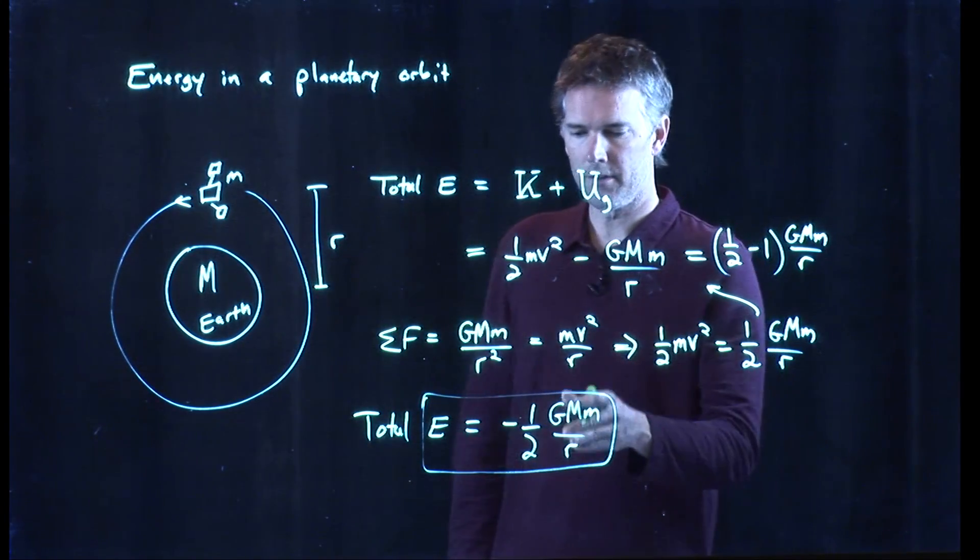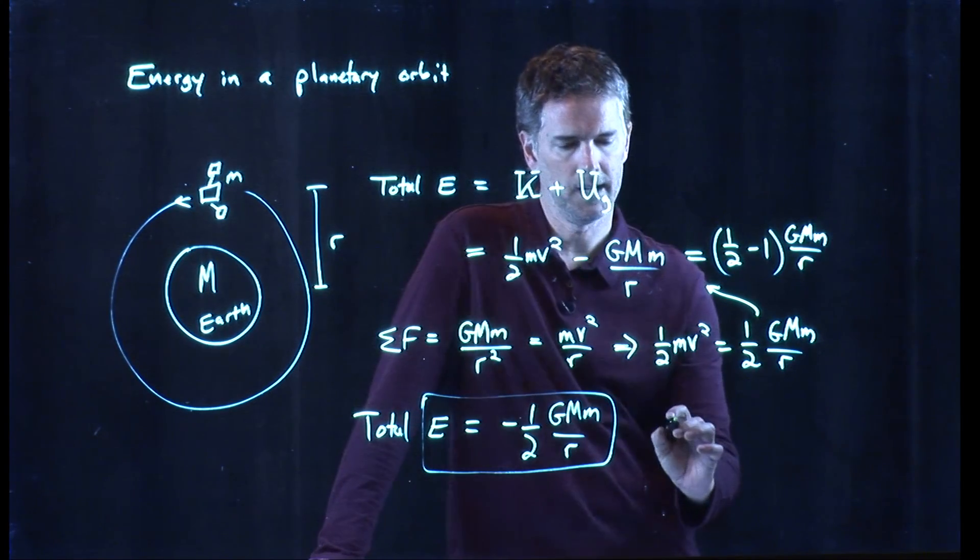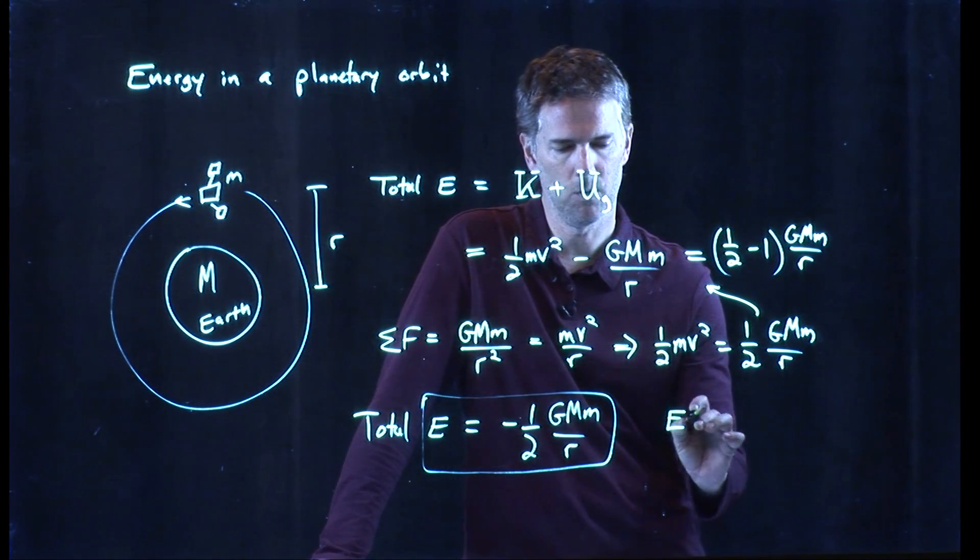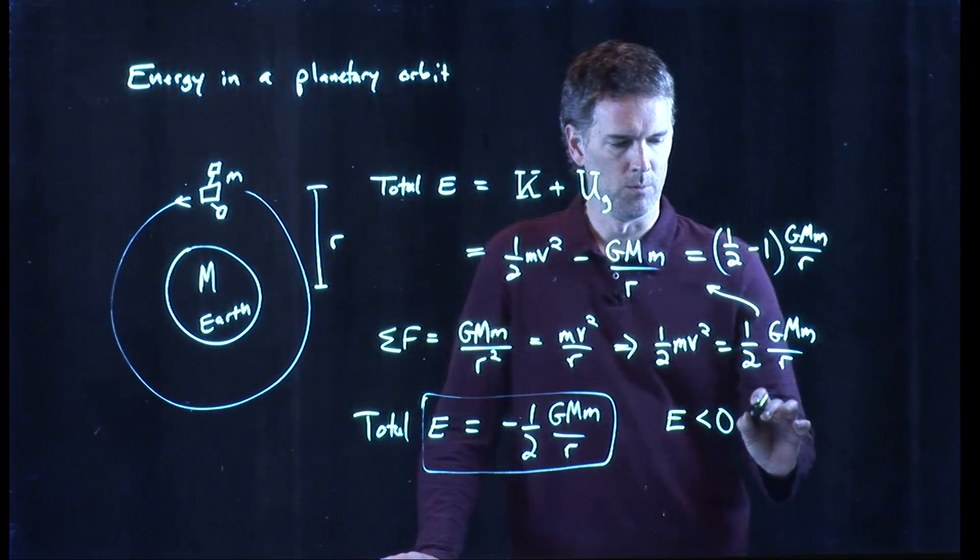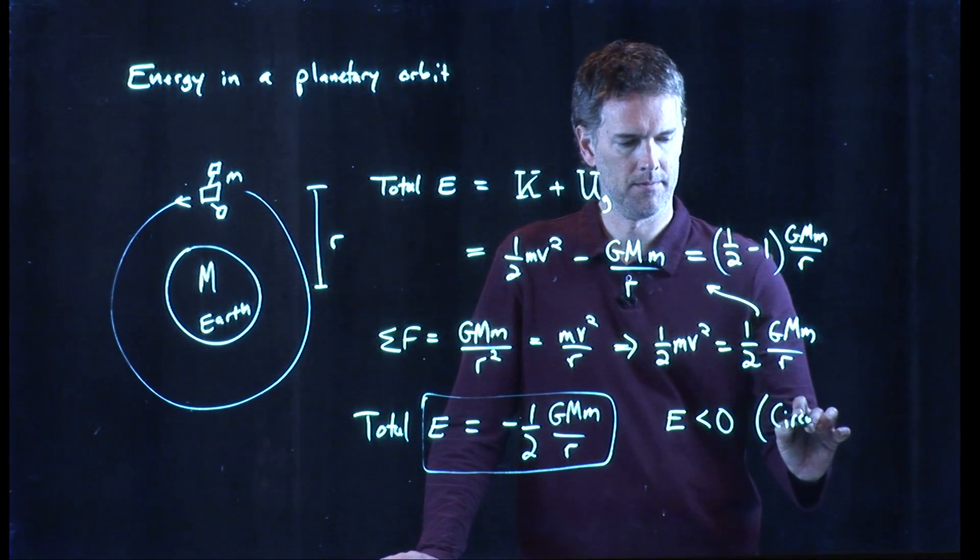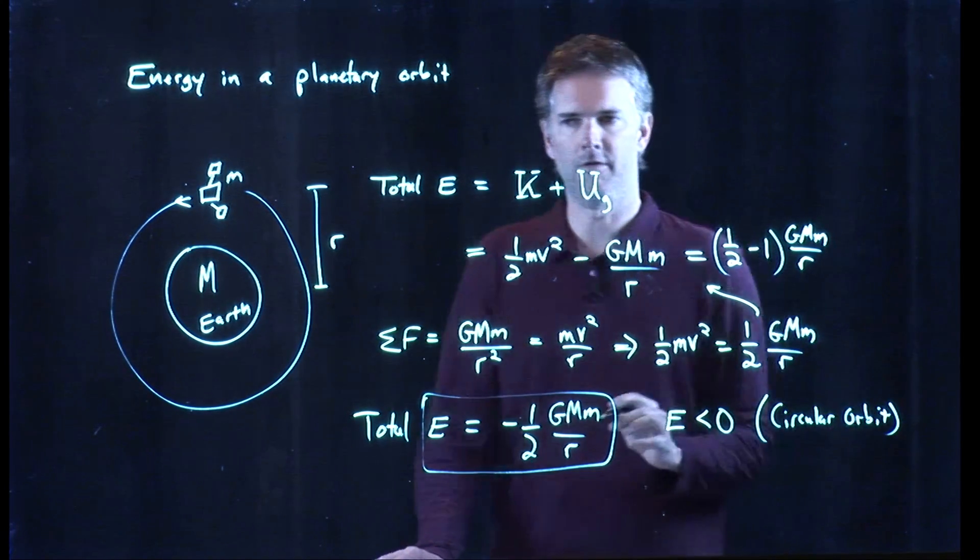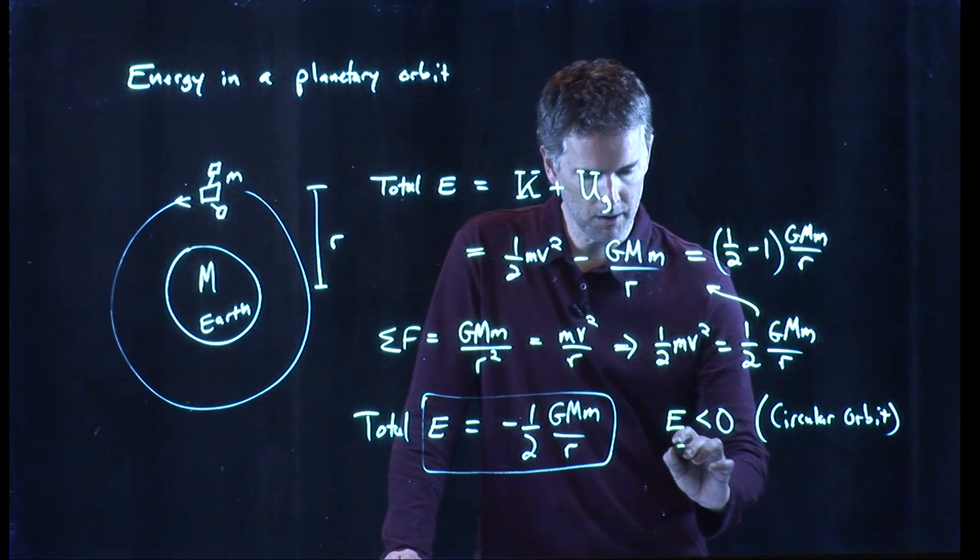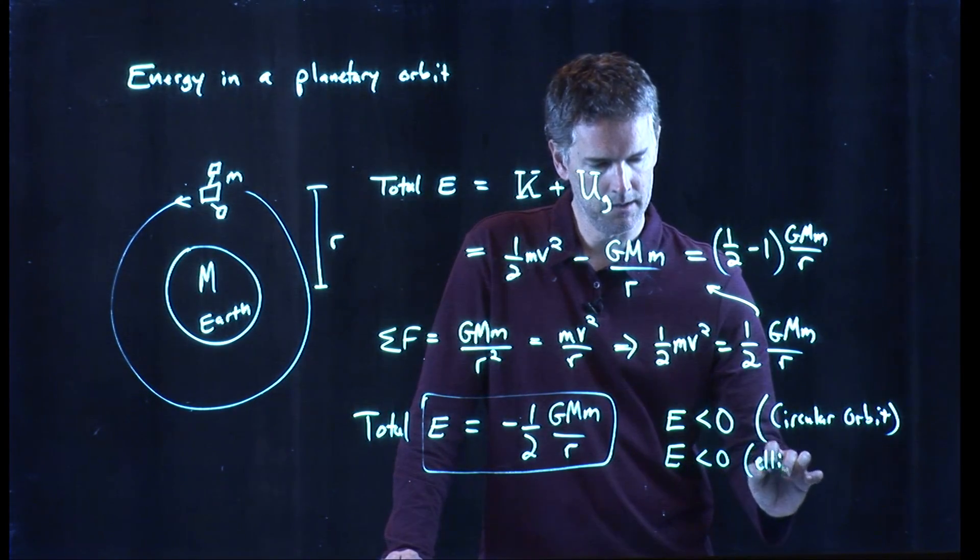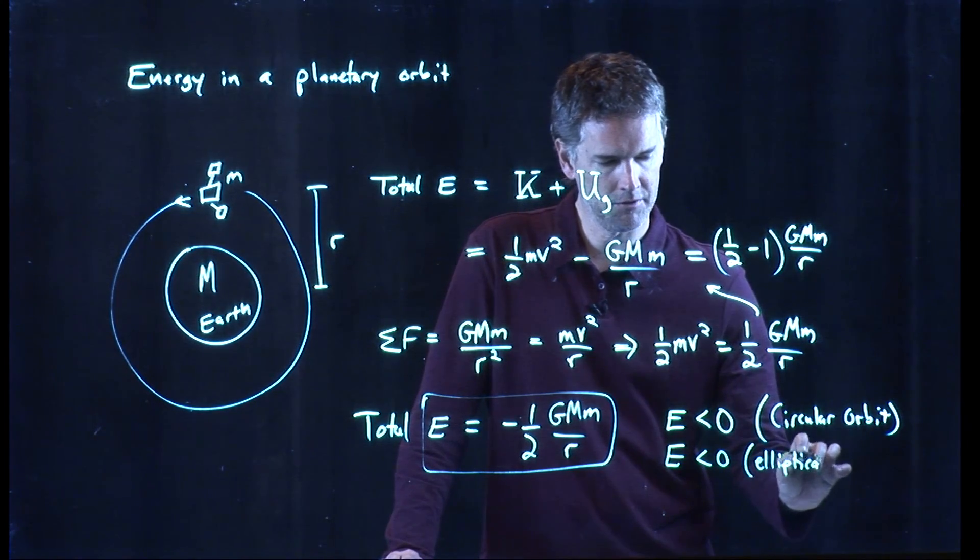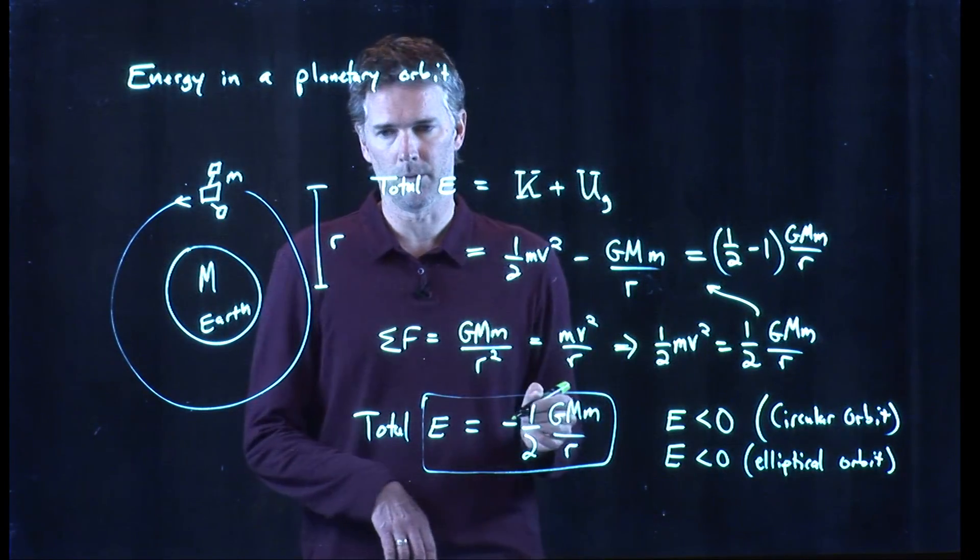And those are all positive numbers. And so what's the energy in the planetary orbit or the satellite orbit? It's negative. We just did a circular orbit. You can, in fact, prove this also for elliptical orbits. It's a little more complicated, but the answer is the same. The total energy is also going to be negative for an elliptical orbit.